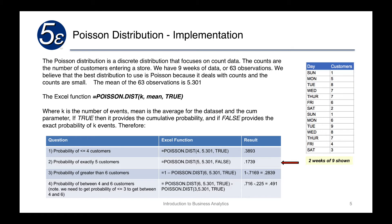If we're looking for the probability of getting exactly five customers, we use POISSON.DIST(5, 5.301, FALSE) — setting cumulative to false so it's not cumulative — and we get 0.1739, or a 17 percent probability of getting exactly five customers.